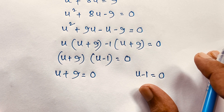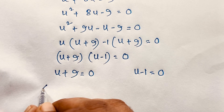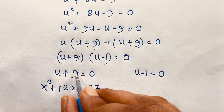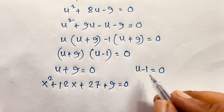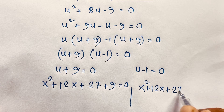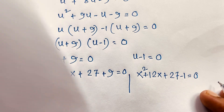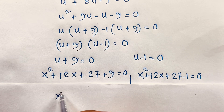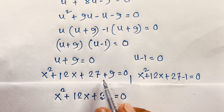Recall that u = x² + 12x + 27. For Case 1 (u + 9 = 0): x² + 12x + 27 + 9 = 0, giving x² + 12x + 36 = 0. This is a perfect square: x² + 2(x)(6) + 6² = (x + 6)² = 0, so x = −6.